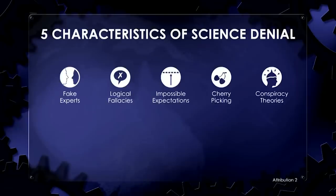A useful framework for the fallacies of science denial comes from a paper by Pascal Diethelm and Martin McKee. They found that movements that deny a scientific consensus share five characteristics: fake experts, logical fallacies, impossible expectations, cherry-picking, and conspiracy theories.